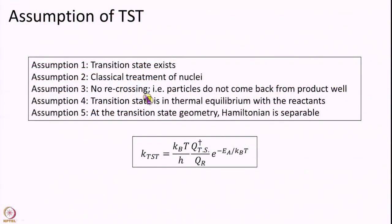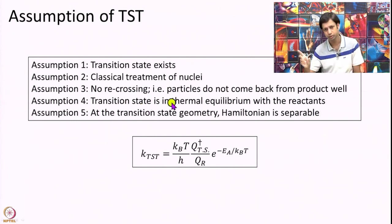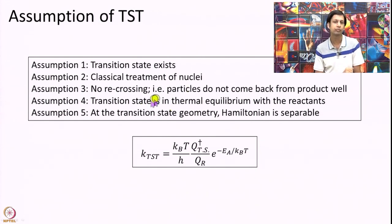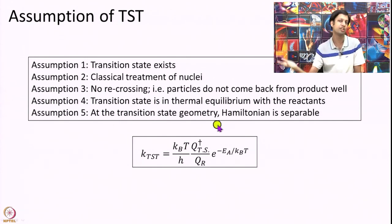Before doing that, let me tell you what the 5 assumptions are. First, we assume that the Transition State exists. Second, we assume a classical treatment of nuclei, specifically the reaction coordinate. Third, we assume no recrossing — that is, particles going from reactants to products, once they cross the Transition State, will never return back. Fourth, the Transition State is in thermal equilibrium with the reactants. And finally, at the Transition State geometry, we separate the Hamiltonian along the reaction coordinate and along all other coordinates.